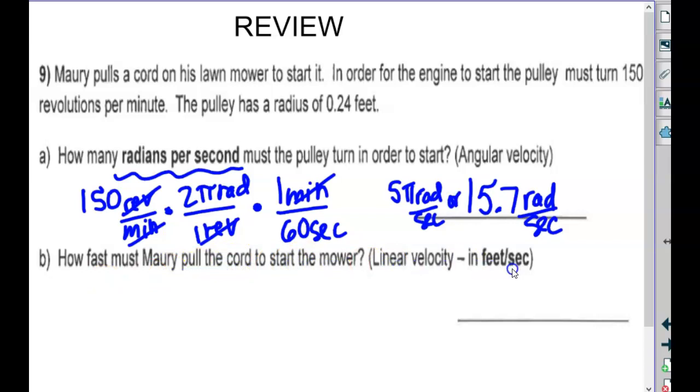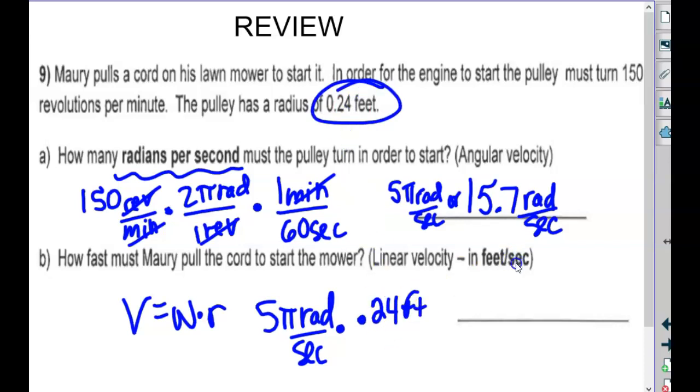So I need to type 150 times 2 times pi divided by 60. It's 5 pi or 15.7 radians per second. How fast must Mori pull the cord to actually start, which would be a linear velocity in feet per second? So the linear velocity is angular velocity times radius. So we had 5 pi radians per second times a radius of 0.24 feet. That's 3.8 feet per second. Anybody ever pull start an old mower? That makes sense, right? You gotta yank it all out in one second.